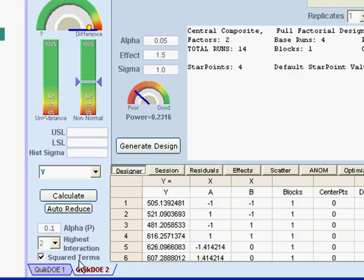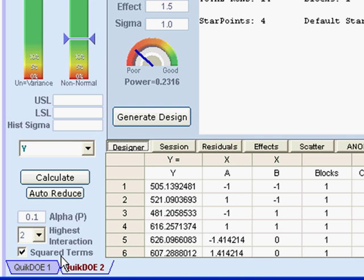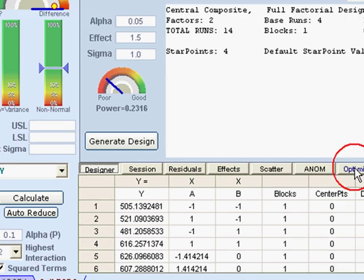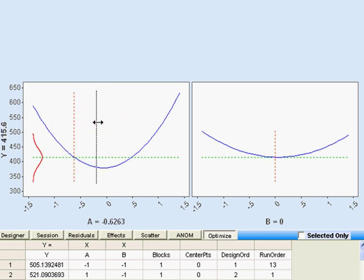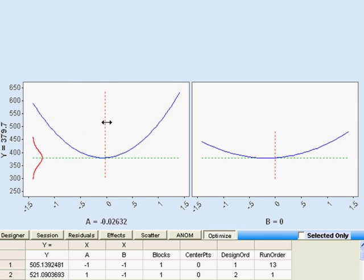One thing you do have to remember to do is to turn on squared terms. Curvature comes from terms with exponents, and this model will handle exponents up to second power. So turn on the squared terms, and then over under the optimizer, once you've analyzed, you may find that your variables produce a nonlinear output, and just like before you can move those around and decide where you want them for the output that you want.